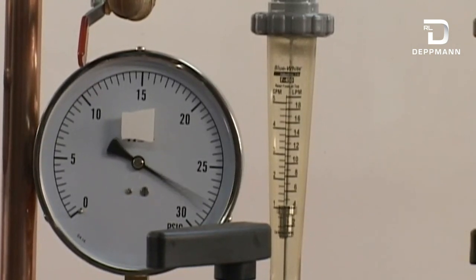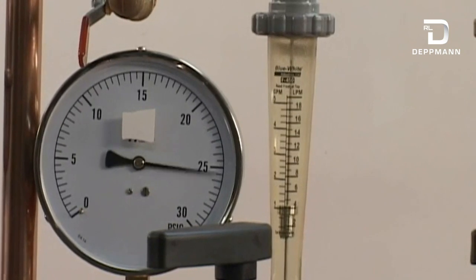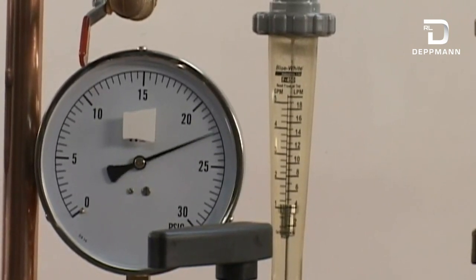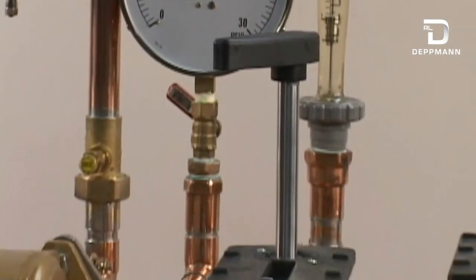Now I'm going to ramp this back down. And as you notice, as I ramp it down, it still stays at 1 GPM. This cartridge in this pressure independent valve is maintaining and holding that 1 GPM.